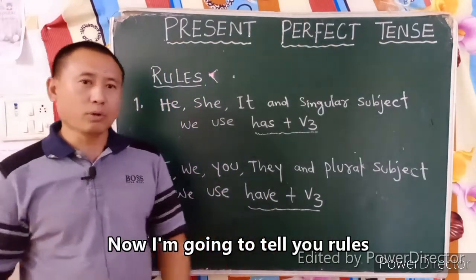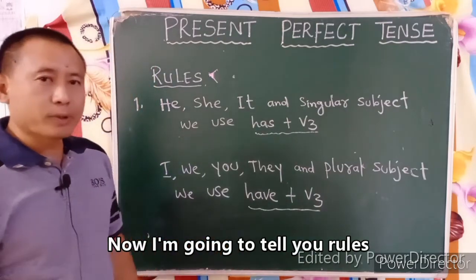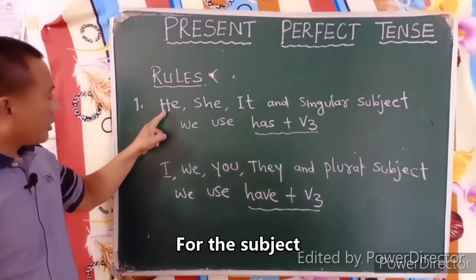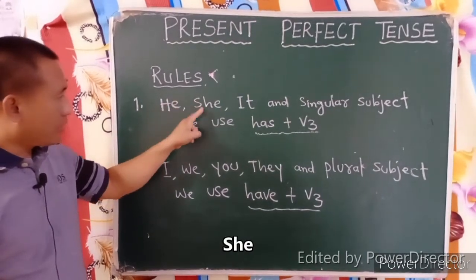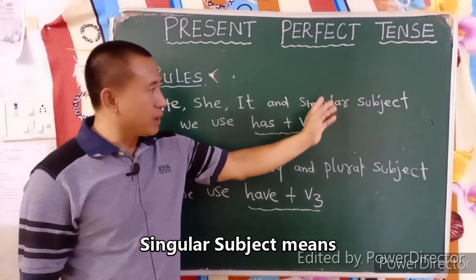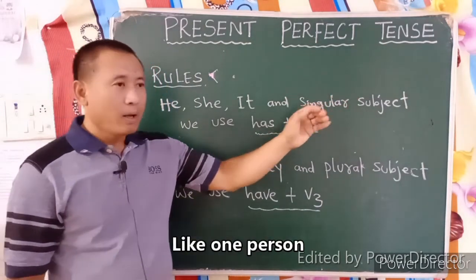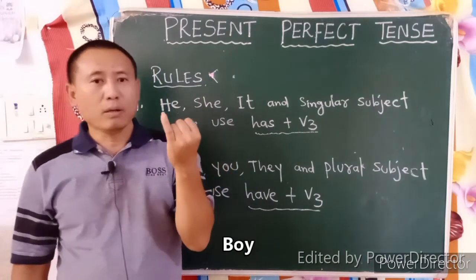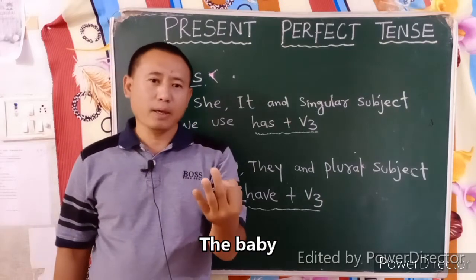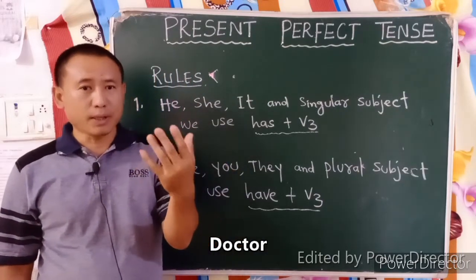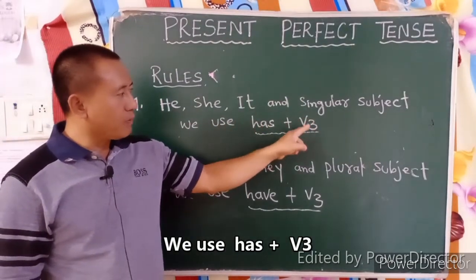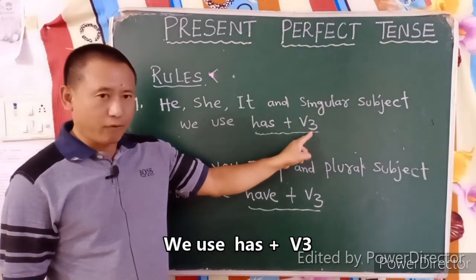Now I am going to tell you the Rules. Rule 1: For the subject he, she, it, and all singular subjects — singular subject means one person, like the boy, the girl, the baby, the doctor — we use has plus V3, that is has plus the past participle verb form V3.